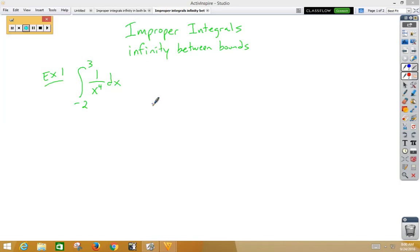In this video, we're doing improper integrals, and we have an infinity between the bounds. So if we look at example 1, and we think about 1 over x to the 4th, we are undefined here when x equals 0. And notice that x equals 0 is between negative 2 and 3.